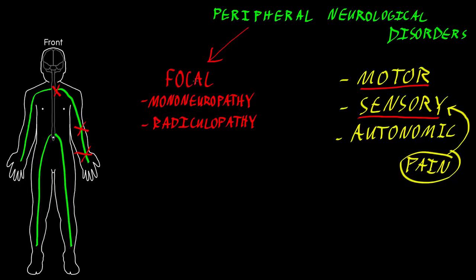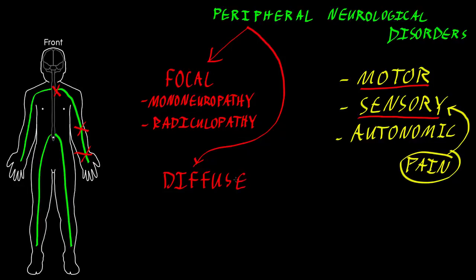In addition to focal lesions, we can also have diffuse lesions — diffuse abnormalities of the peripheral nervous system. Diffuse dysfunction of the nerves, kind of all of the nerves being sick, we call polyneuropathy. Poly for many, and neuropathy for an abnormality of the nerves. Polyneuropathy.